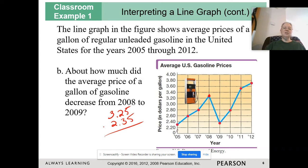How much did it decrease? So I'm going to subtract those two numbers. Grab my calculator, and so I have $3.25 minus $2.35, which gives me approximately 90 cents.